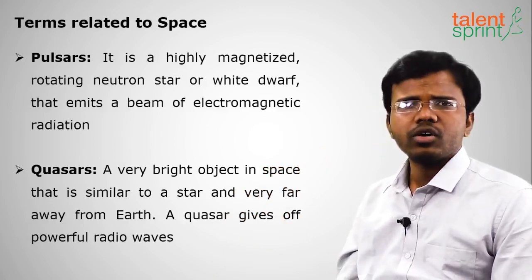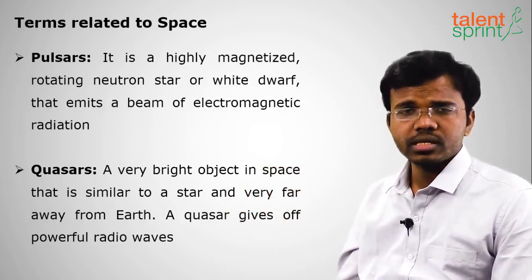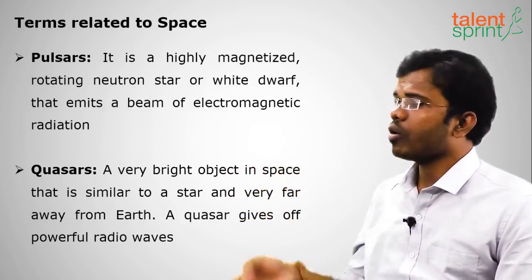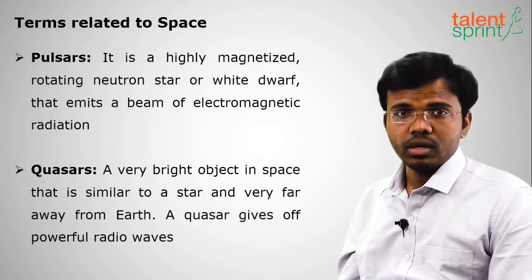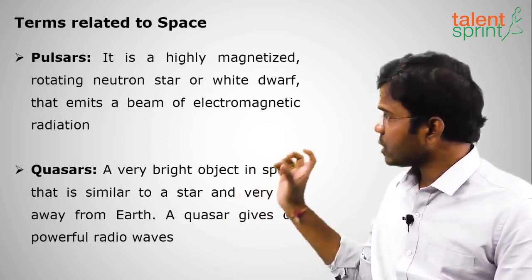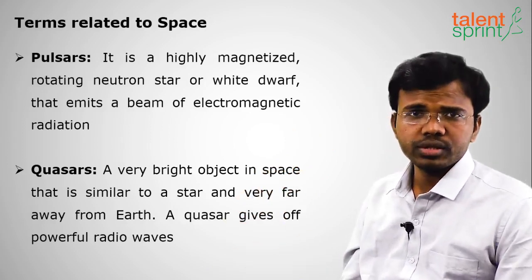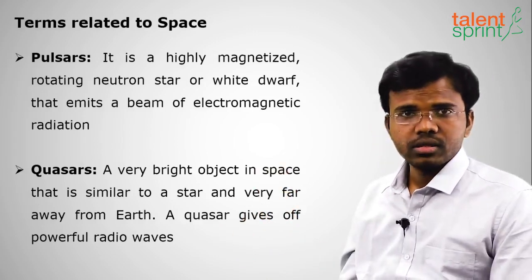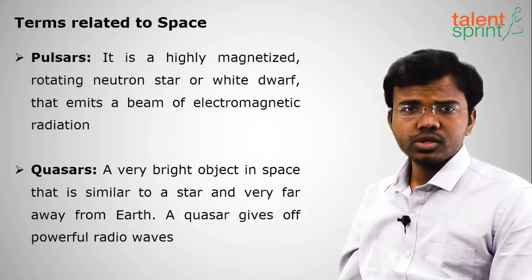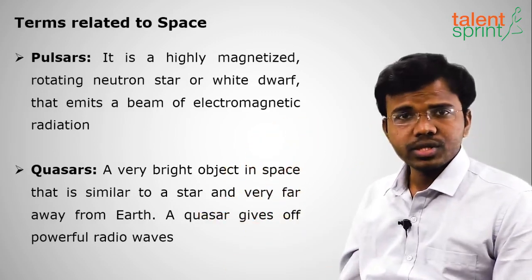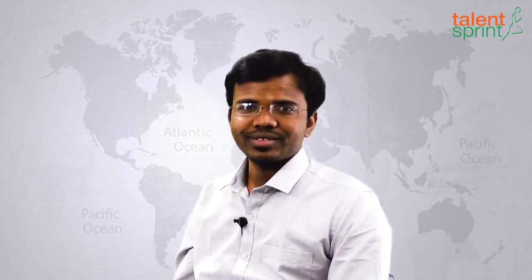A quasar is a very bright object in space, far from Earth. Quasars give off powerful radio waves only, not the entire electromagnetic spectrum. These are the important terms in part three of the solar system topic. Please be thorough with all of this so you don't miss any exam question. Have a great day, thank you so much.